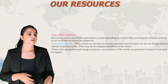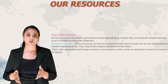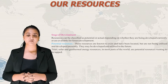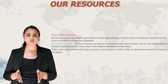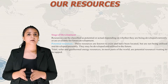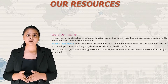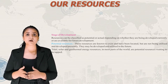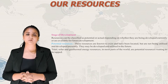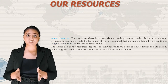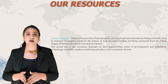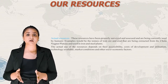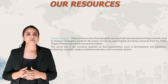Now let's talk about stage of development. Resources can be classified as potential or actual depending on whether they are being developed currently or are available for future development. Potential resources are known to exist and have been located but are not being utilized presently — tidal, solar and geothermal energy in most parts of the world are examples. Actual resources have been properly surveyed and are currently used by humans, such as the iron ore and coal extracted from the Chhota Nagpur Plateau and used in iron and steel plants.